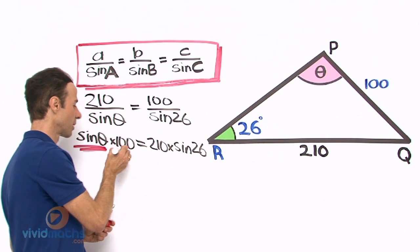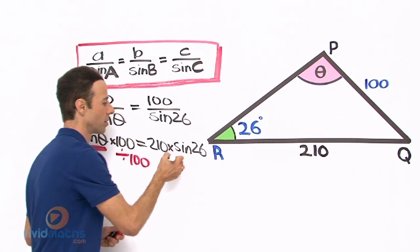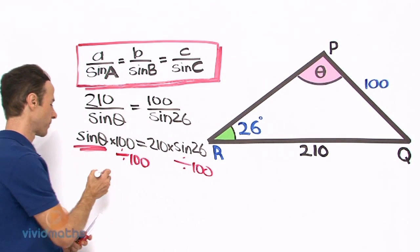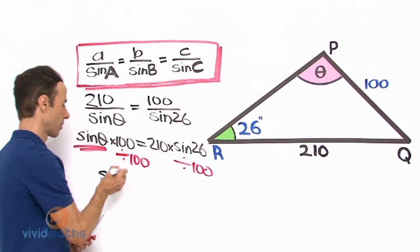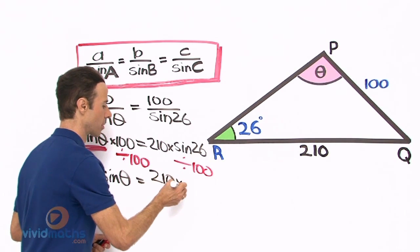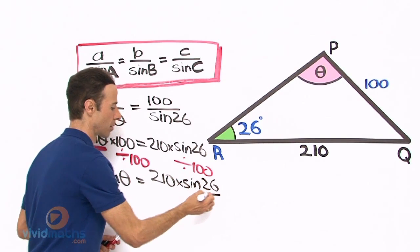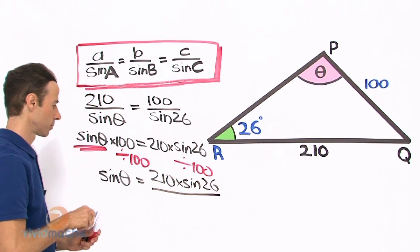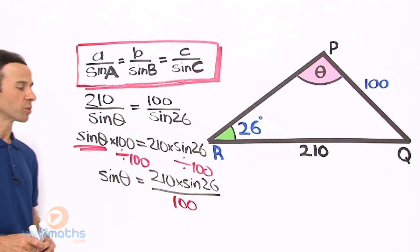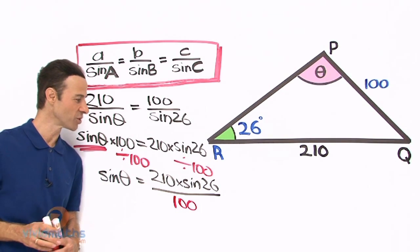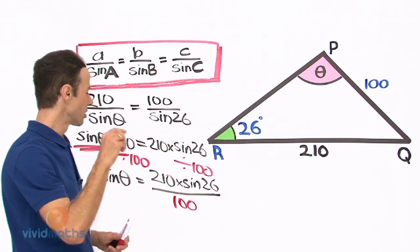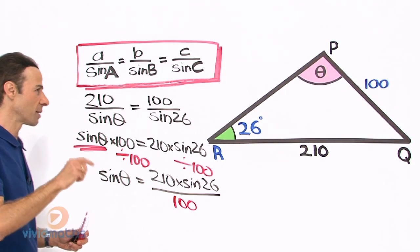So let us do that. That is going to give us there we go, sine theta equals 210 times sine 26 all over 100. Let us put that in the calculator so 210 times sine 26 divided by 100 gives us